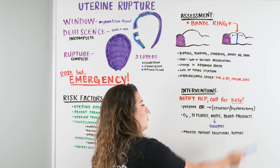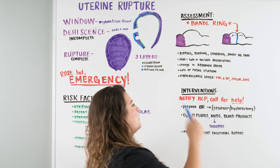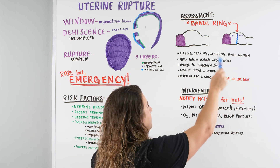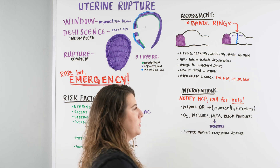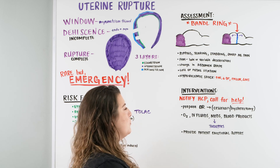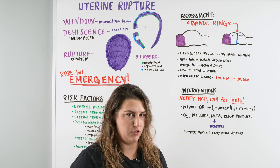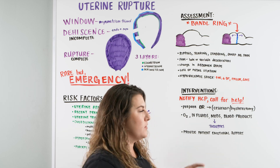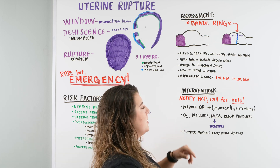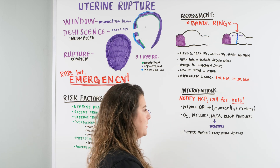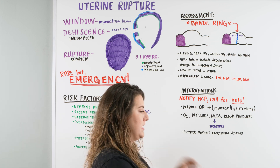If you have an inkling — a change in abdominal shape, funny fetal heart rate, complaints of pain, a drop in blood pressure, or a change in mental status — call the healthcare provider and call for help. Let your charge nurse know and let everyone on your floor know. Your team needs to prepare the OR because you may need to do a cesarean section and then a hysterectomy to remove that torn uterus.